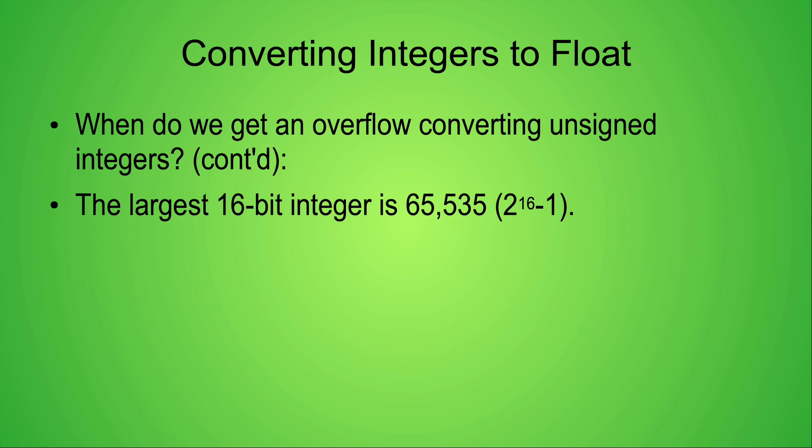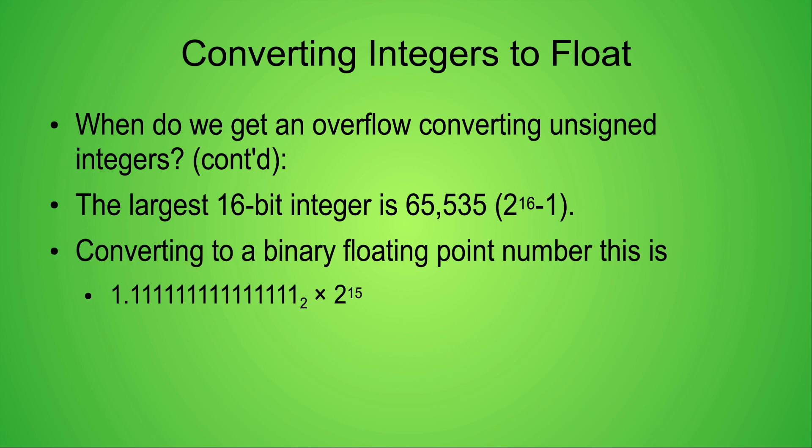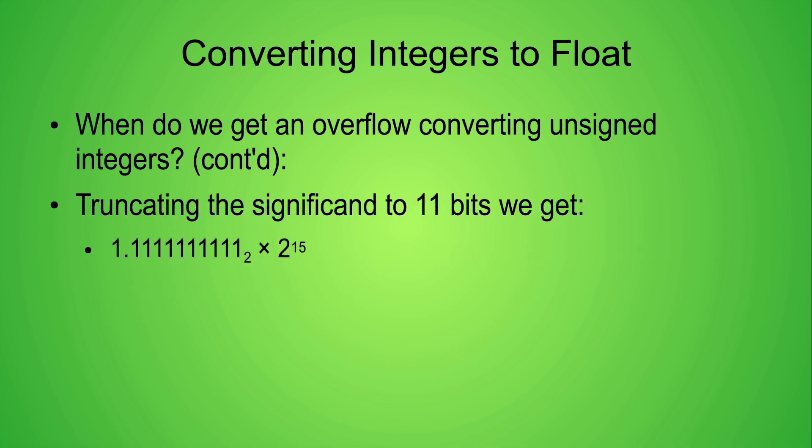As noted, the largest 16-bit unsigned integer is 65,535. If we convert this number into a binary floating point value we get 1 point followed by 15 ones multiplied by 2 to the 15th power. In order to store this value as a binary16 number we truncate the significand to 11 digits to get 1 point followed by 10 ones times 2 to the 15th power.